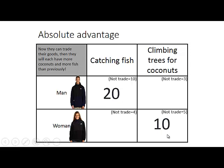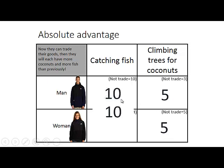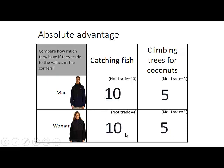If they now trade, the woman will have 5 coconuts and the man will have the other 5 coconuts, while the man will have 10 fish and the woman will have 10 fish. Comparing this to what they would have had doing everything themselves, they now have more due to specialization.